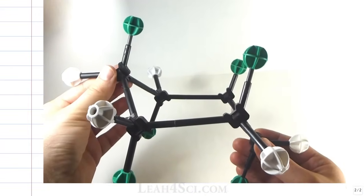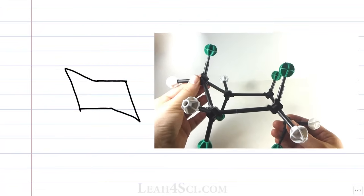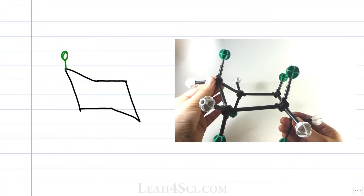Let's see what this looks like on paper starting with a simple chair skeleton. We'll add the axial substituents and I want you to recognize the pattern. Remember on the kit, I showed you that the green and white were alternating because the axial went up, down, up, down, well we have the same pattern here, up, down, up, down, up and down.